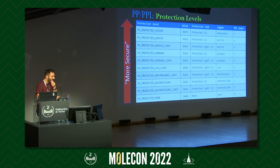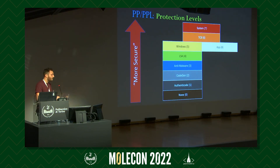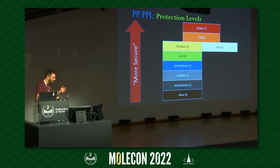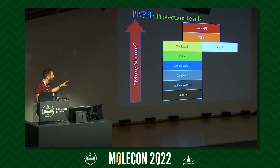If we graphically display all those levels, we can see that System is the most privileged. There is also a weird case where Windows and App signers sit at the same level — an interesting design choice by Microsoft. Looking at LSASS in normal builds, we can see it has the PPL protection verification enabled in the extended key usage field.